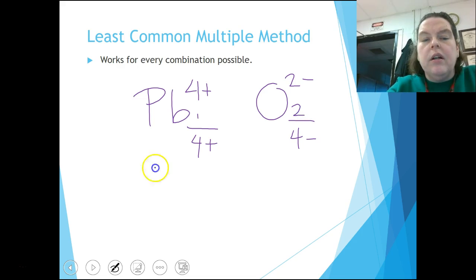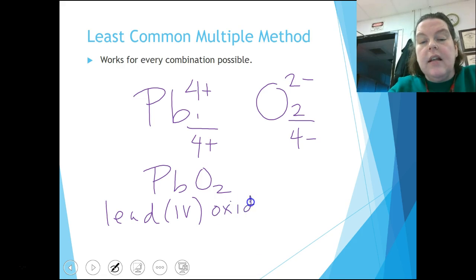So that means I need four electrons lost. I need four electrons gained. What do I multiply a four by to get a four? That's a one. What do I multiply a two by to get a four? I have a two. So my formula is PbO2. And because lead is one of those that changes charge, I have to tell you. So I'm going to call it lead four oxide.